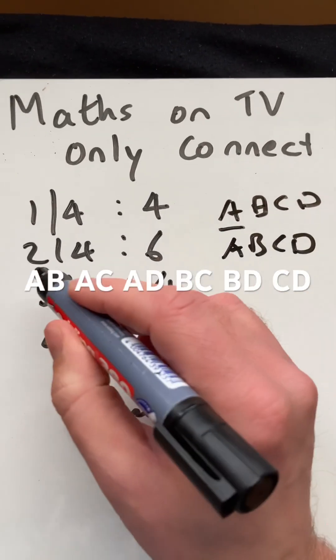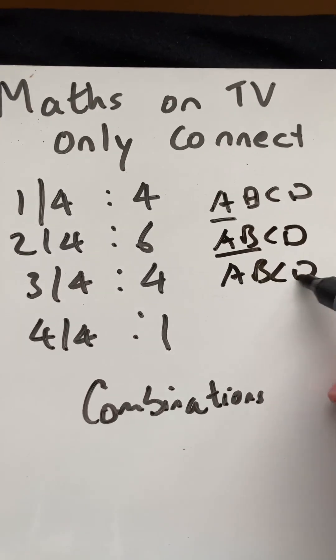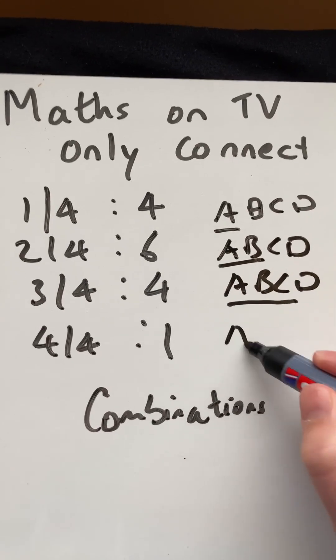If I have those same four and I want to take them out in pairs, so two out of those four, there's six ways I could take those. If I wanted three of them, there's four different ways.